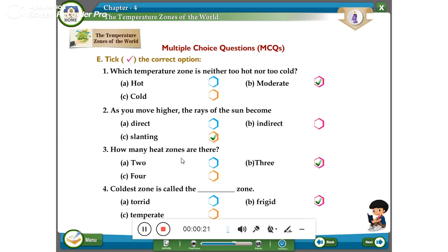As you move higher, the rays of the sun become direct, indirect, slanting. So it is C, slanting is the correct answer. You can tick near the slanting.